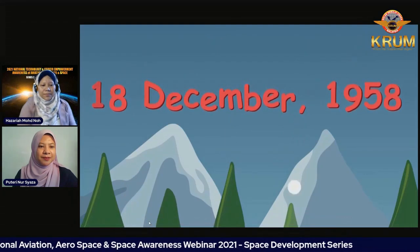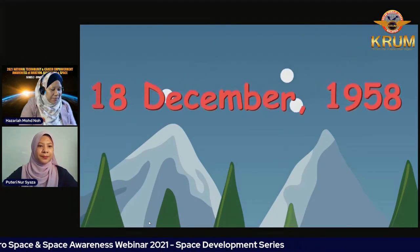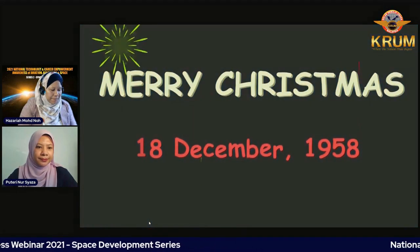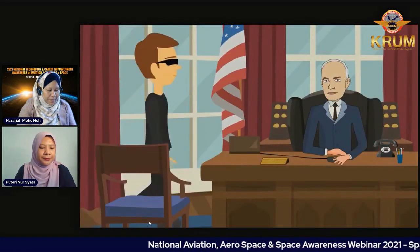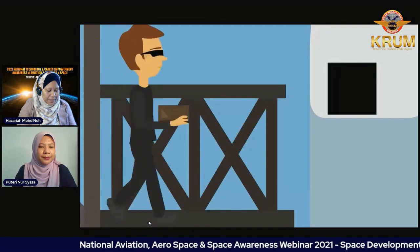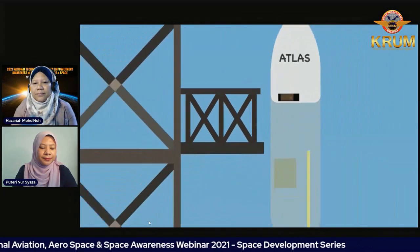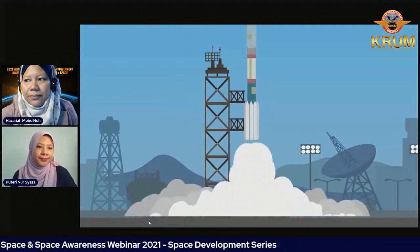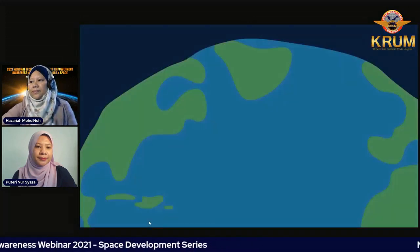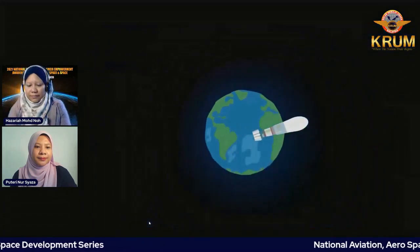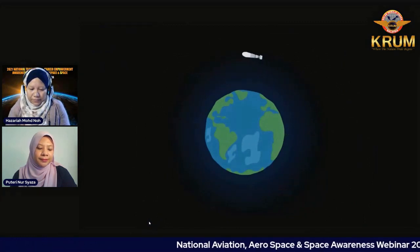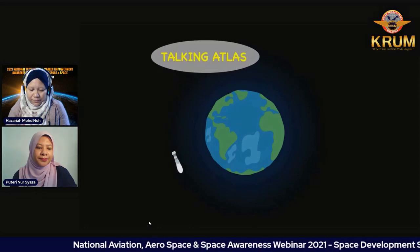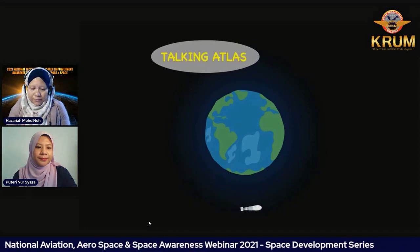On December 18, 1958, America launched a rocket that broadcast a Christmas message from space. The message was recorded by Dwight D. Eisenhower, who was the President of the United States at the time. The mission was considered a great success as it launched the first ever communication satellite into orbit, laying the foundation for what is now an essential multi-billion dollar industry. The communication satellite used to broadcast the Christmas message came to be known as the 'Talking Atlas,' as it was launched aboard an Atlas rocket.